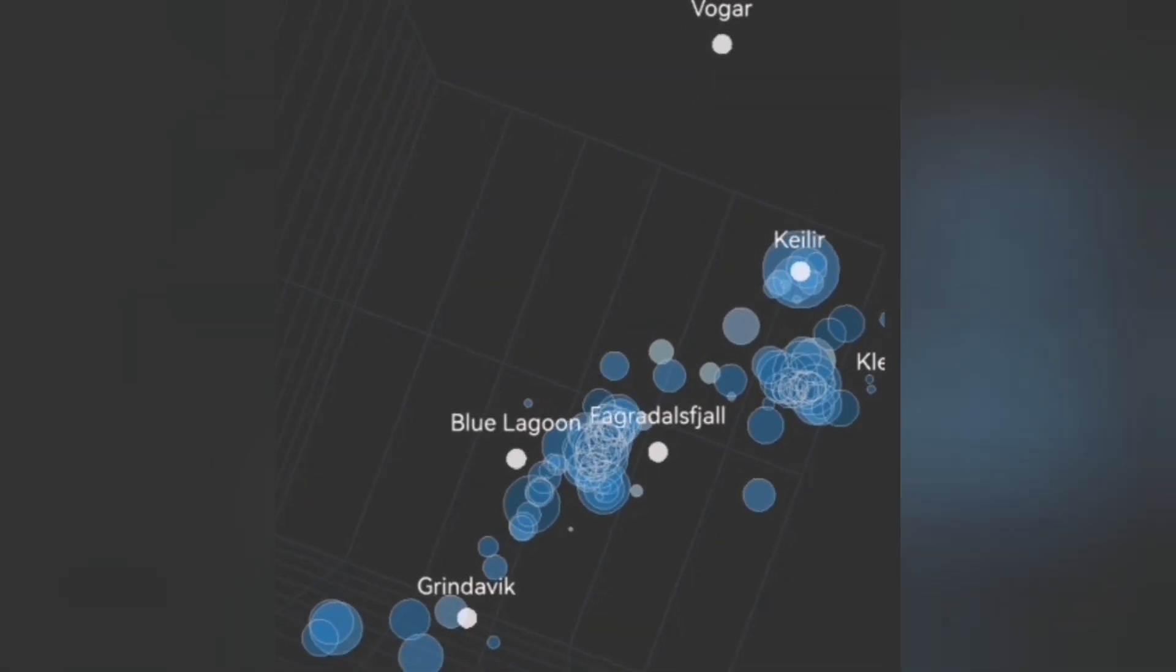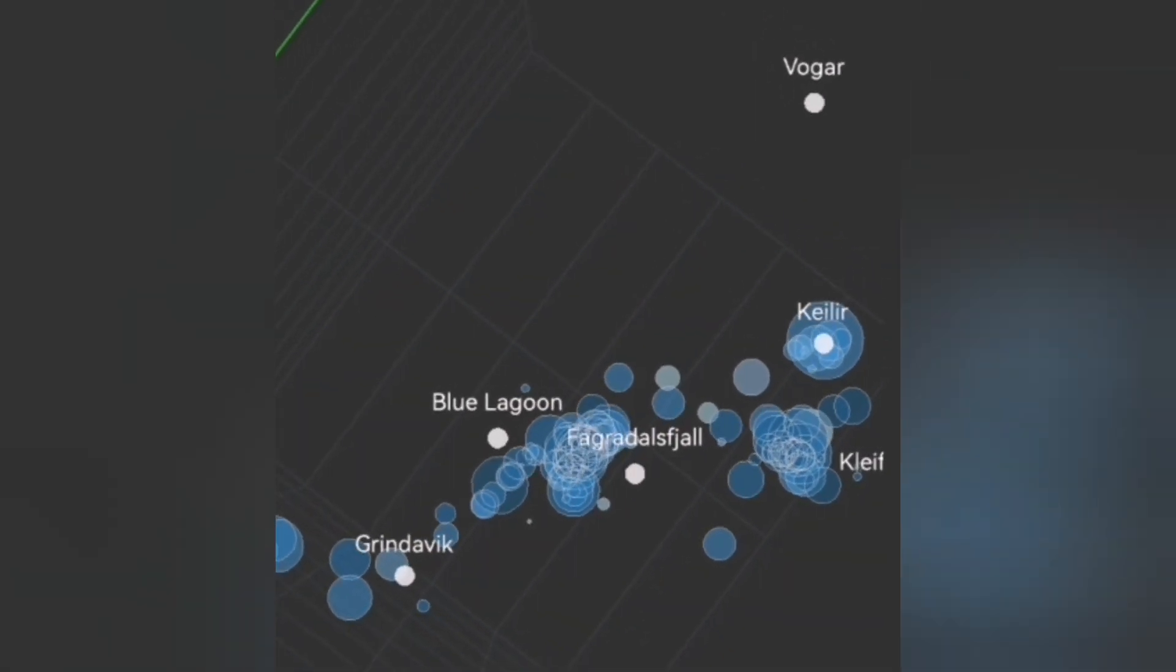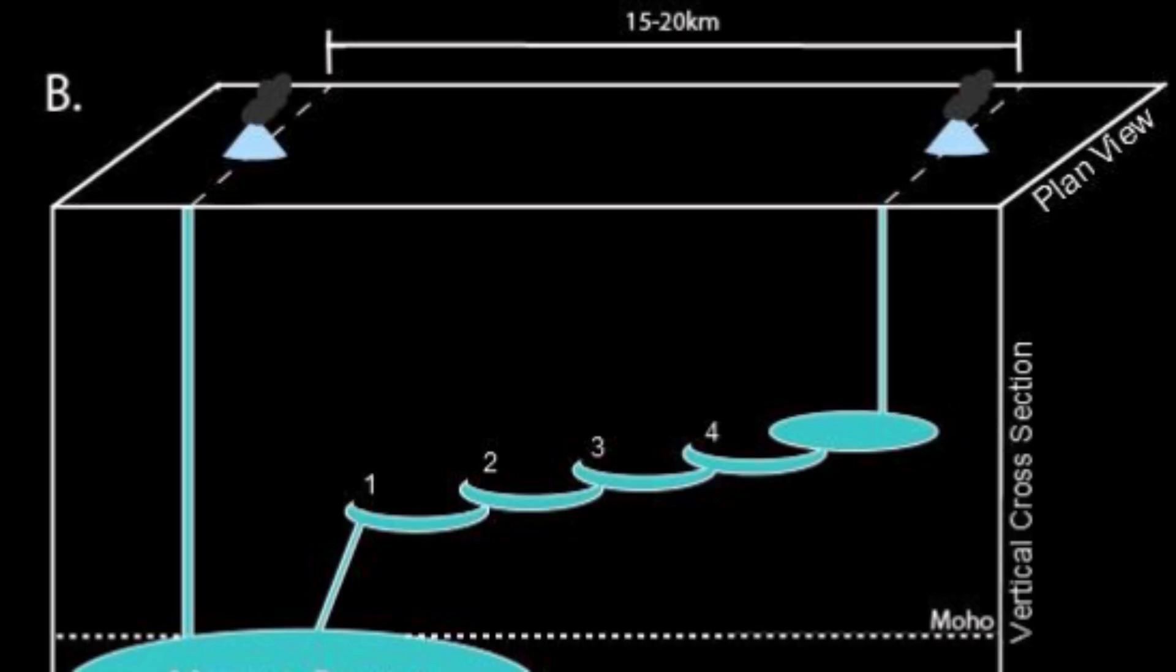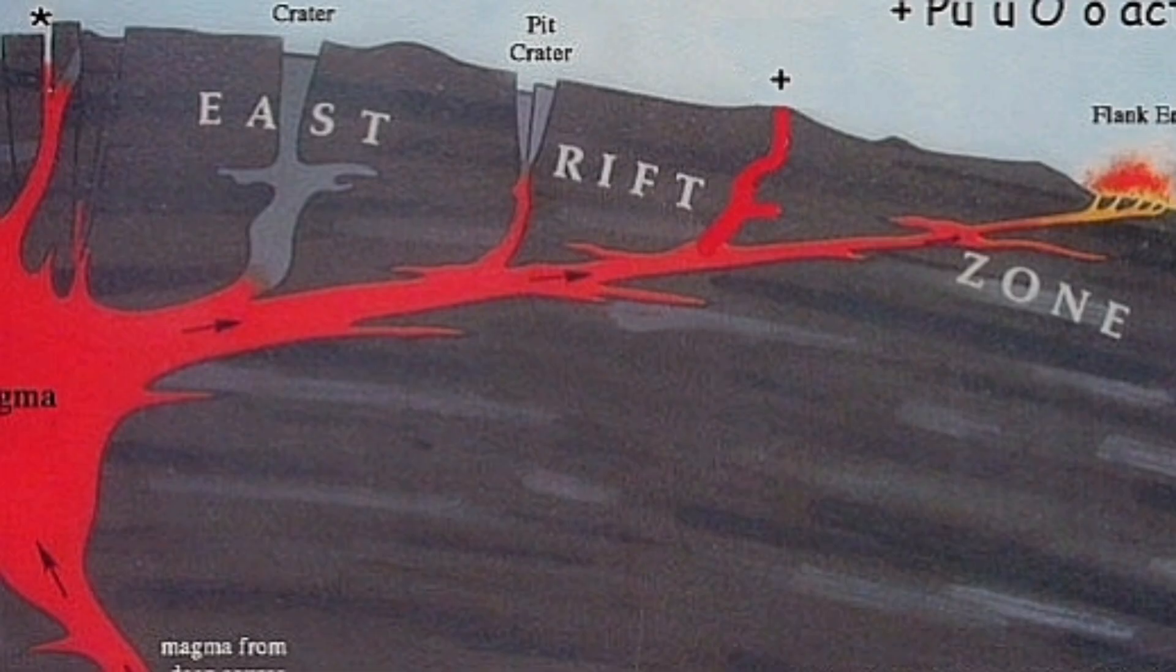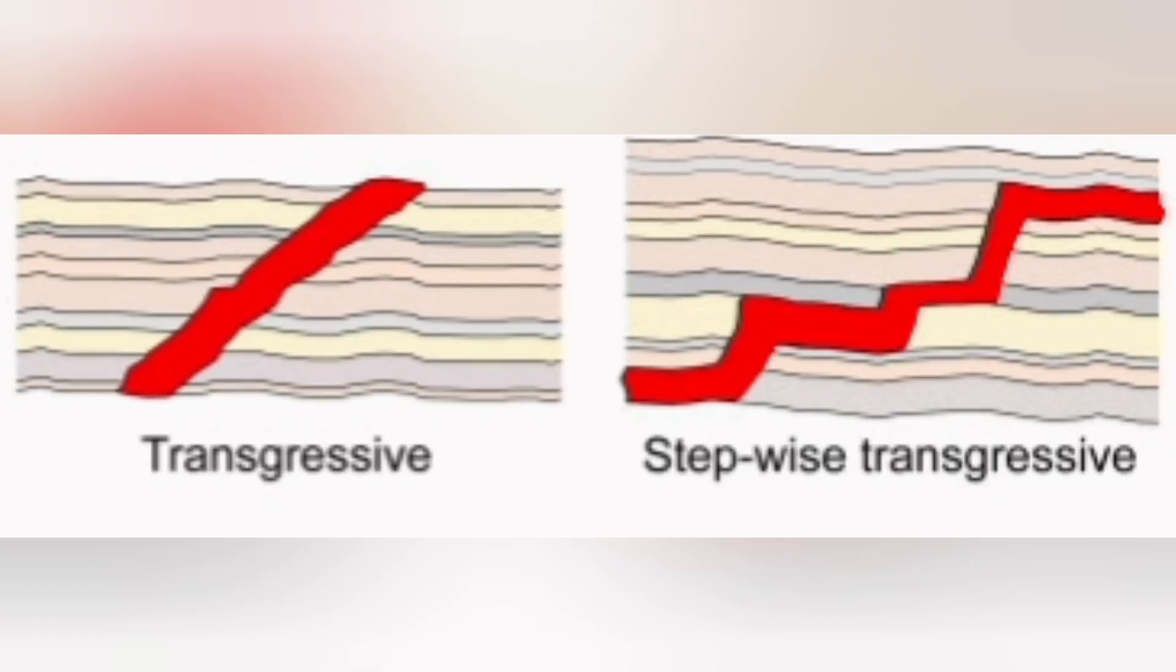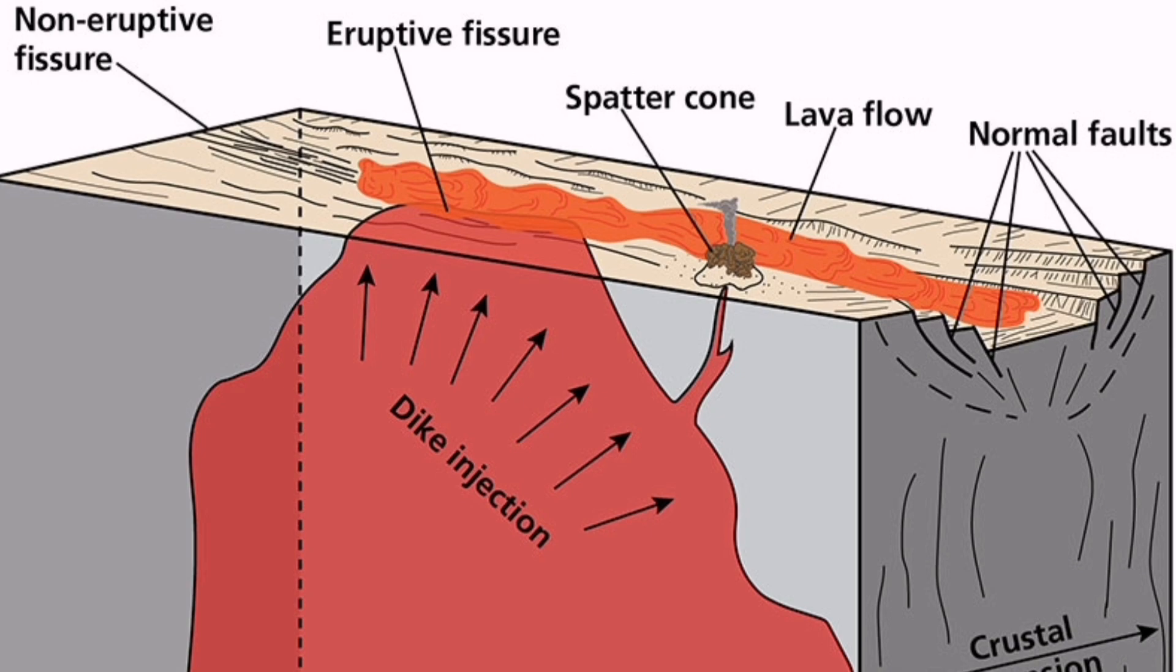This is the diagram or cartoon showing what I mean by this transgressive sill moving from what is Svartsengi at an angle toward the town of Grindavik, the vicinity, north part of it.